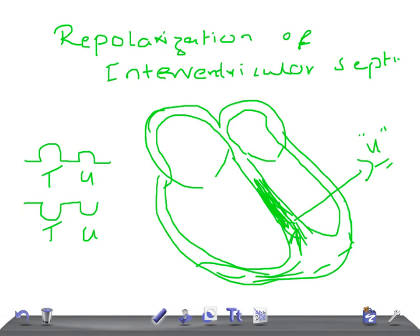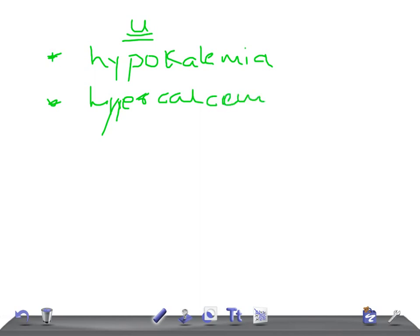Remember the three important conditions where you see prominent U-waves. One is hypokalemia, low potassium. Then we have hypercalcemia, high calcium, high blood calcium. And hyperthyroidism.